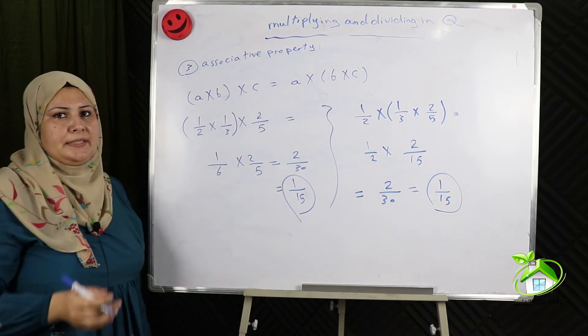Another example using the distributive property: 3 tenths times (11 minus 1) equals 3 tenths times 10. Simplify the denominator with the numerator, equals 3.